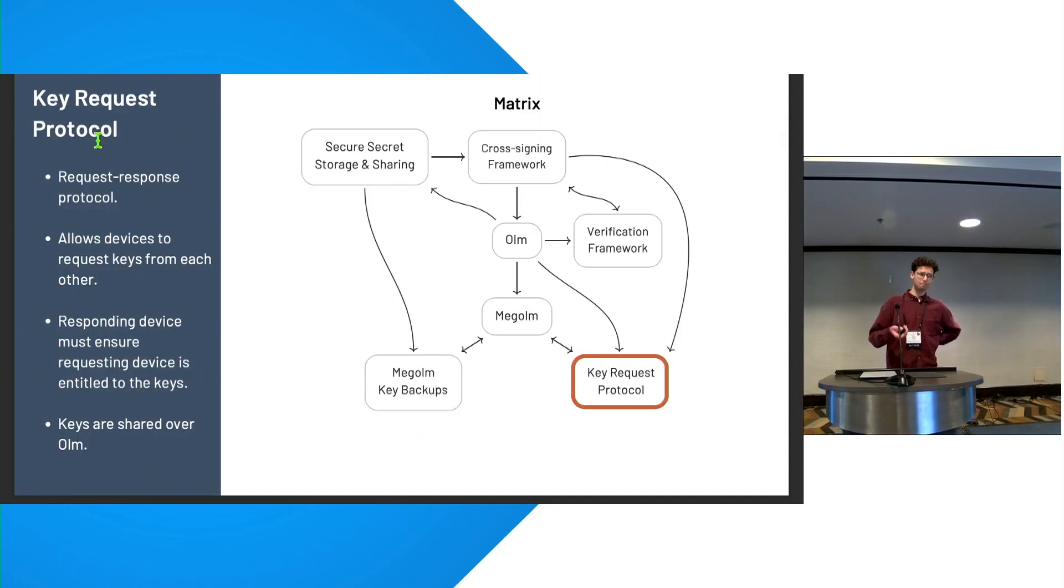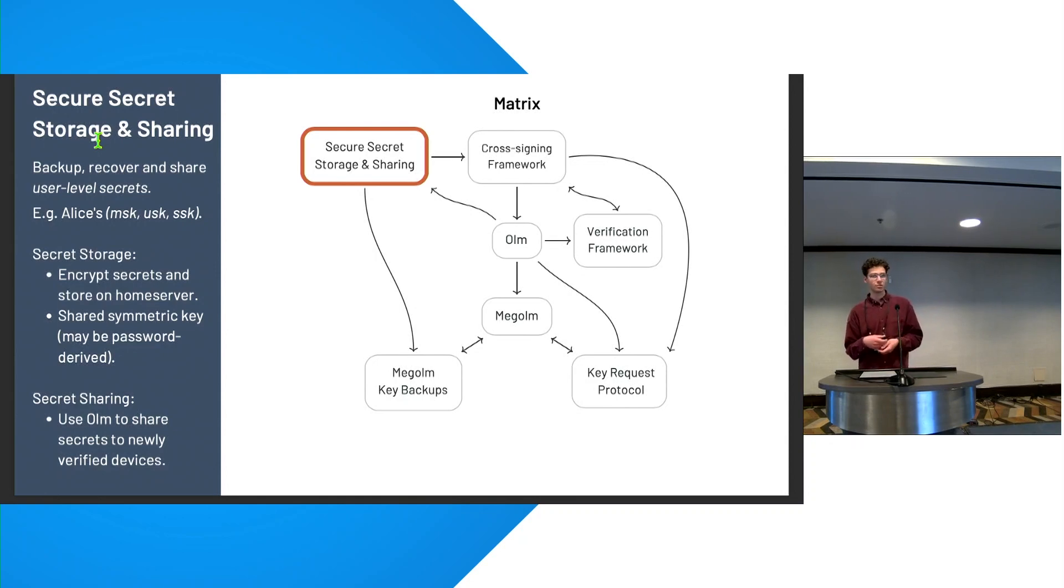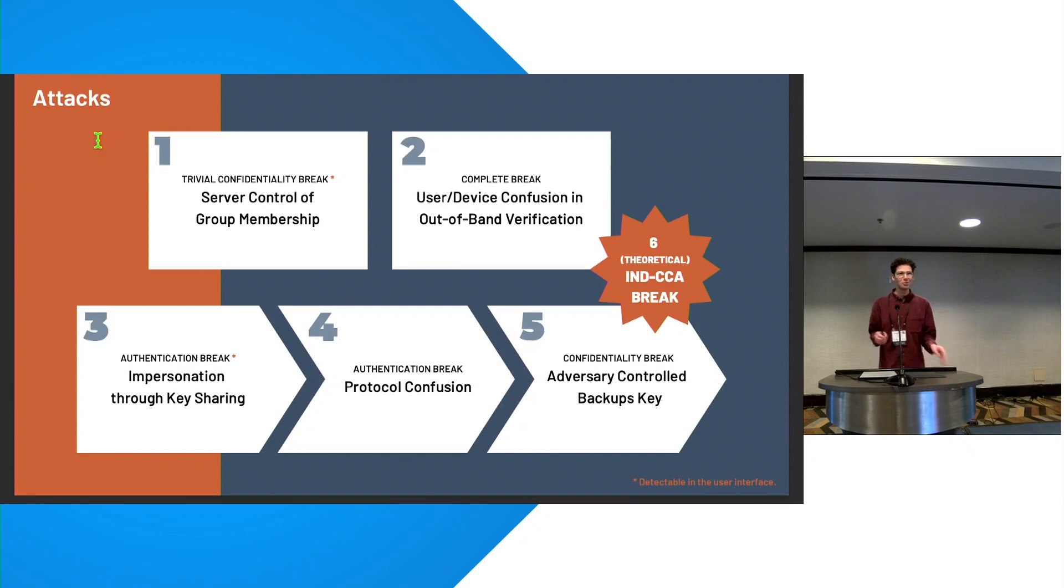On top of this, when Alice adds a new device, she wants to share the history and her old messages with the new device. And this can be done using the key request protocol. And they do this by sharing these inbound MegaOhm sessions over the Ohm protocol. The MegaOhm key backups protocol is a layer on top of this that is an asynchronous alternative, where you're effectively just backing up these keys using a shared secret. The final part of the puzzle is the secure secret storage and sharing protocol, which allows backing up, recovery and sharing of user-level secrets rather than these MegaOhm sessions. So this might be Alice's cross-signing secrets. And there are two parts. The first part is a secure backup. And the second part is a request response protocol over Ohm. So now we've given you a whistle-stop tour of Matrix.